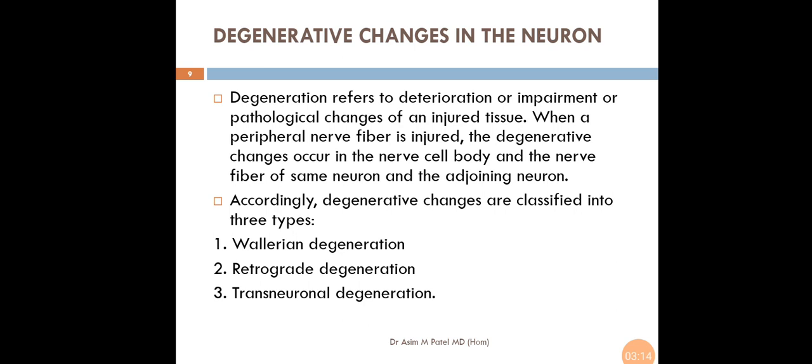The degenerative changes occurring in the neuron are classified into three types depending upon the location. Because the degenerative changes occur in the nerve cell body, the nerve fiber of the same neuron, and the adjoining neuron. Accordingly they are classified into three types: Wallerian Degeneration, Retrograde Degeneration, and Transneuronal Degeneration.